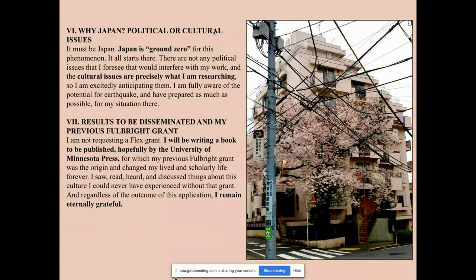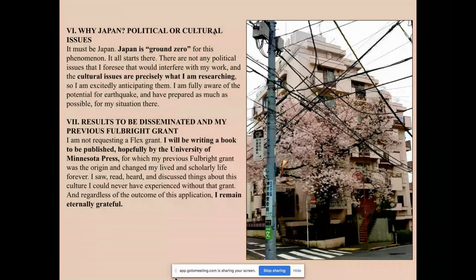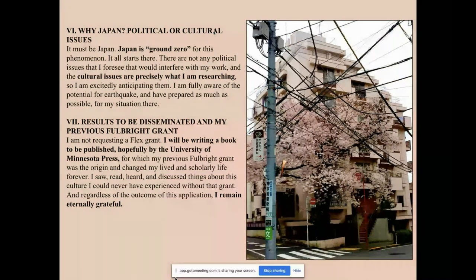Number five — methodology, logistics, time frame, and feasibility: divide my research time between reading and writing at the manga museums, with interviews and so forth. I'm experienced at using trains, subways, buses, and Google Maps for walking, and my Japanese is sufficient to survive in Japan. Finally, number seven — results: I state I'll be writing a book and reference my previous Fulbright grant. I made it clear I didn't want a flex grant — I wanted to go and stay for nine months. I said: 'I'll be writing a book, hopefully published by the University of Minnesota Press, for which my previous Fulbright grant was the origin and changed my lived and scholarly life forever. Regardless of the outcome of this application, I remain eternally grateful.' It changed my life.